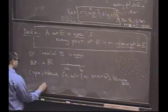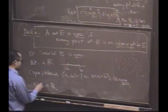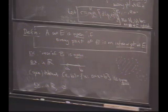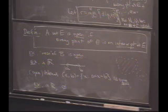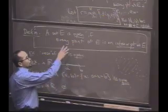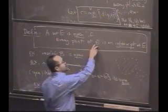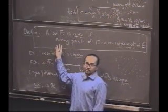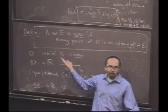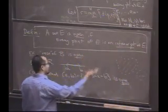What about in R — what about the empty set? Is it open, according to our definition? Most of you say it's open. Why? It's open if every point of the empty set is an interior point of the empty set. Well, there are no points in the empty set. So this is vacuously true — in an empty way, very true. It's true that every point is an interior point because there aren't any points.